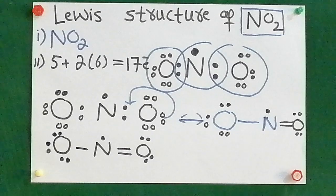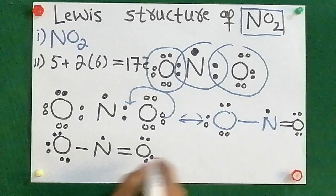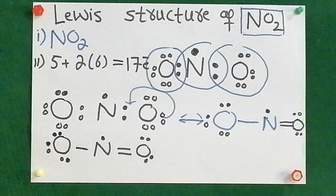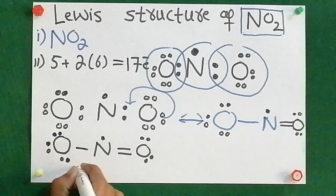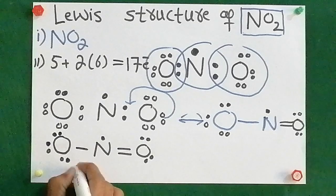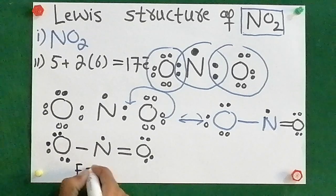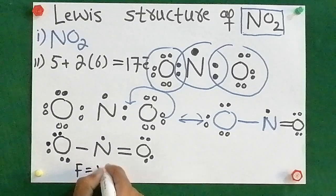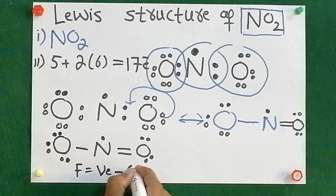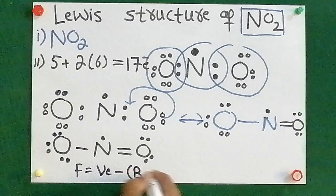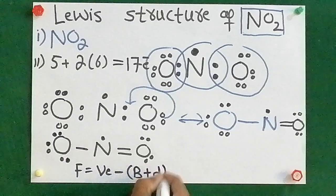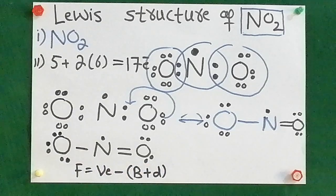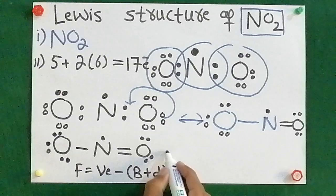Now I am going to determine the formal charge. To determine formal charge, the formula is: valence electrons minus bonds plus dots.